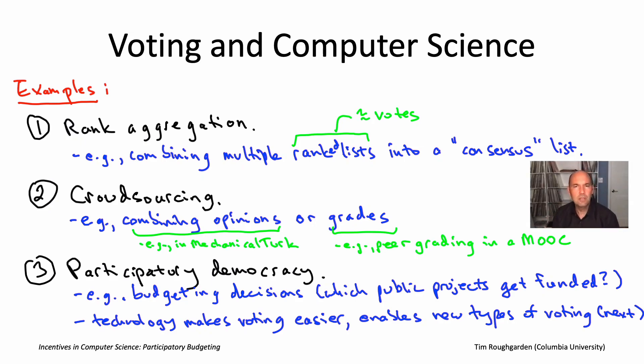These are just a few of the reasons that computer scientists have been thinking seriously about issues related to voting over the past couple of decades. Let's use the rest of this module to talk in more specificity about that last example, specifically participatory budgeting.